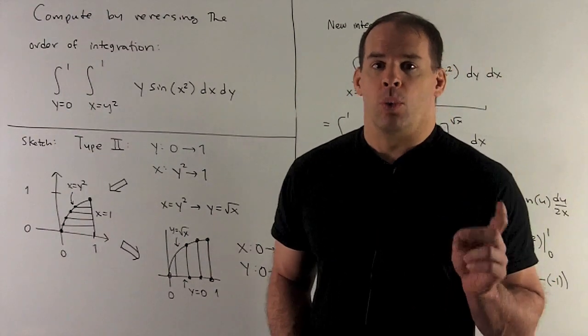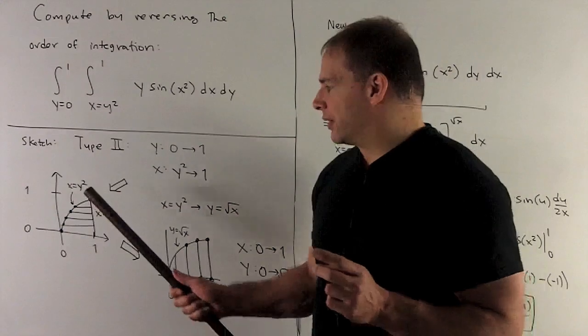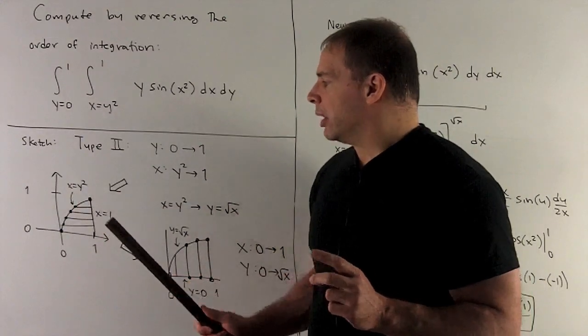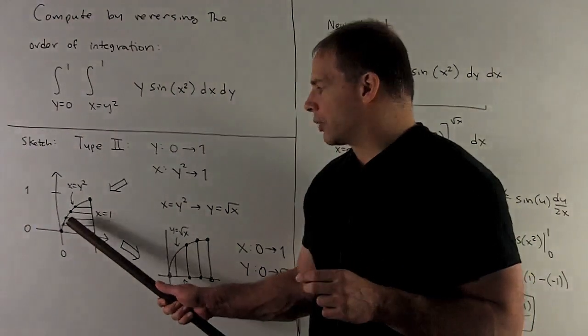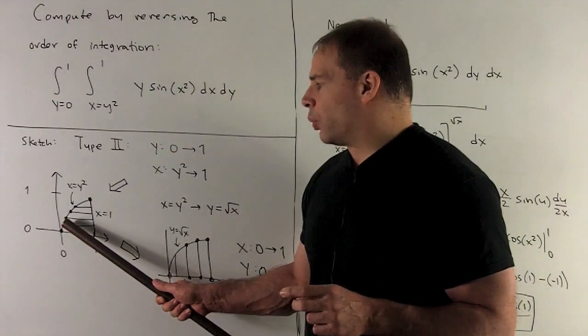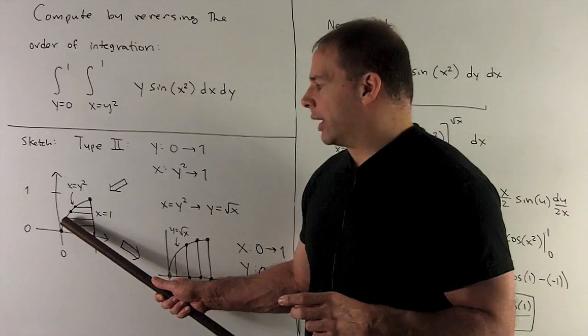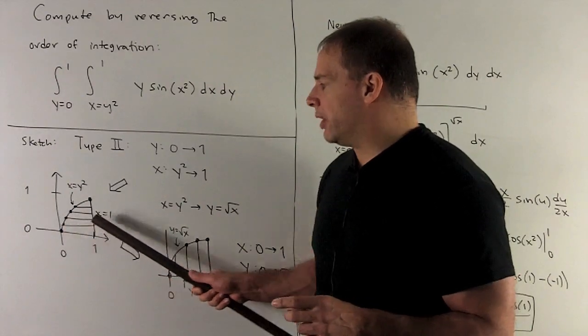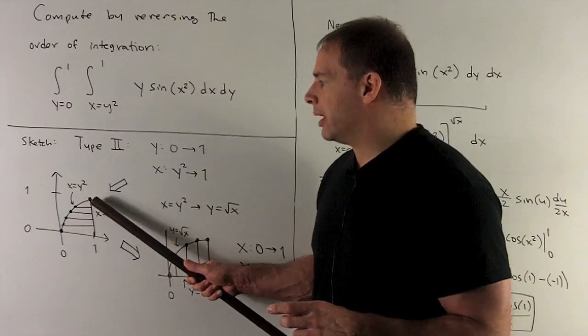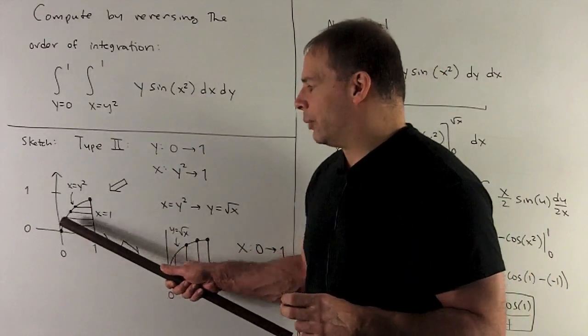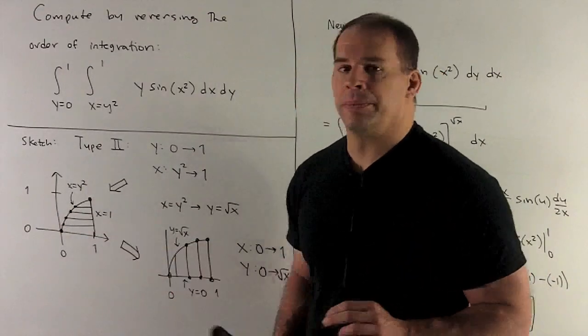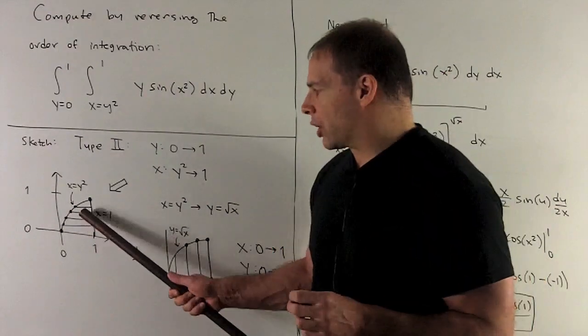Next, which part do I shade in? Is it this region or this region? What I do is start at x equals y squared, right there, and then we move until we hit x equals 1 by going to the right. So I'm going to fill in this region here. If I had x equals 0, I'd be going in the other direction.